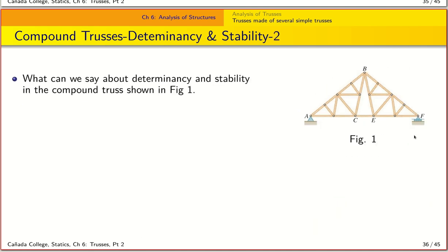So now let's look at the next example here and ask the question, what can we say about determinancy and stability in the compound truss shown here which differs from the Fink truss in that we have only one joint here called CE that combines the two trusses and they have a common point here B at which the two simple trusses were joined. Well, let's look at the number of joints we have in this structure. So let's begin by counting N. So what is N?